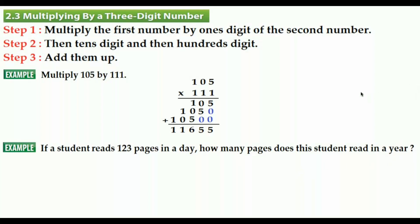Multiplying is easier because math makes your life easier — that's why we use multiplication. So we multiply 365, the number of days in a year, by 123, the number of pages read per day. We have already learned how to multiply a three-digit number by a three-digit number.